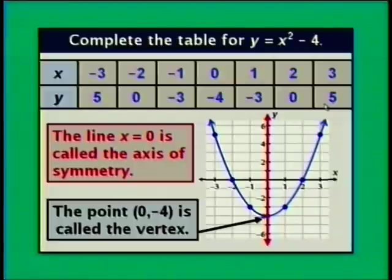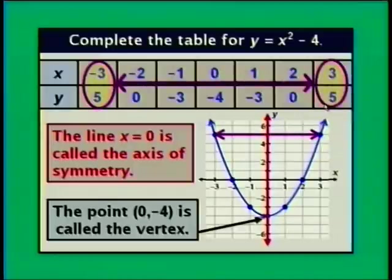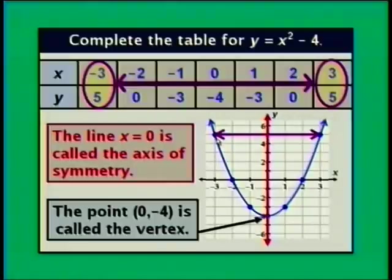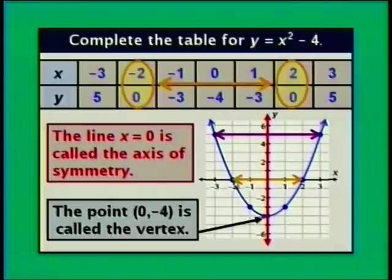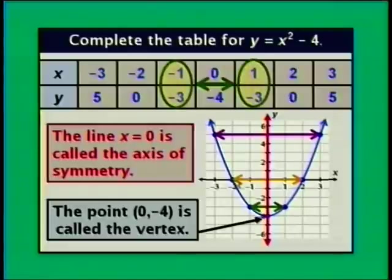We already saw some symmetry when creating our table. For instance, the points (negative 3, 5) and (positive 3, 5): one is three units to the right of the axis of symmetry, the other is three units to the left, both with the same y value. Similarly, when x is negative 2 or positive 2, the y value is 0, and each point is two units from the axis of symmetry. When x is negative 1 or positive 1, both points are one unit from the axis of symmetry with the same y value.